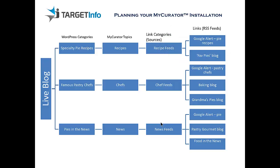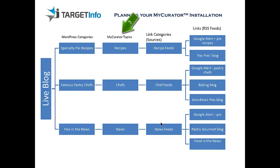We've planned out the installation from the live blog all the way back to the feeds. It turns out that it's best to enter the information the opposite way: enter the link categories, then enter links, then create topics, and you can create new categories with the topics. So you plan from the live blog back, but then enter from sources to topics. The training videos are built to be watched this way, too.